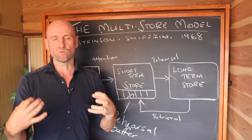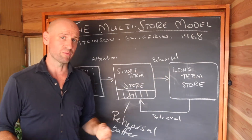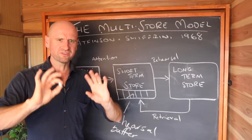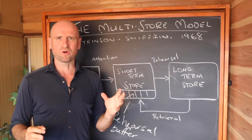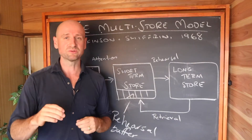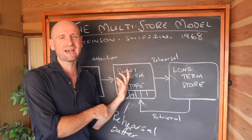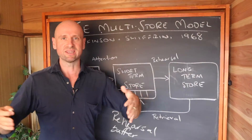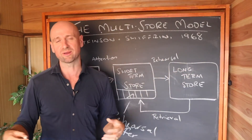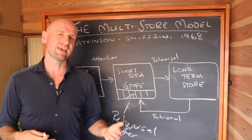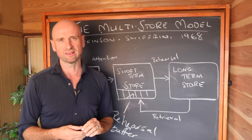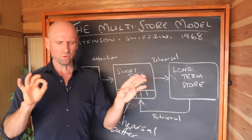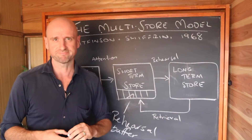If you're confused about why you're seeing lots of different diagrams of the multi-store model that all look a little different, it's because in their original article, Atkinson and Shiffrin never actually put their model into a diagram. Everyone has had to construct their own version, which is why they can look different. That confused me for a long time.